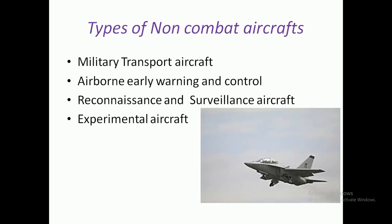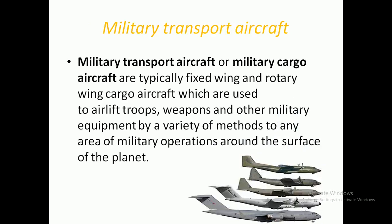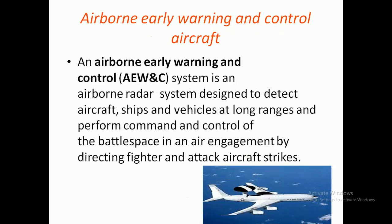The types of non-combat aircraft include: military transport aircraft, airborne early warning and control, reconnaissance and surveillance aircraft, and experimental aircraft. Military transport aircraft, also called military cargo aircraft, are typically fixed wing or rotary wing aircraft used to airlift troops, armaments, weapons, and other military equipment to areas of military operations. Airborne Early Warning and Control, commonly called AEW&C, is an airborne radar system designed to detect aircraft, ships, and vehicles at long ranges and perform command and control of the battle space, directing fighter and attack aircraft strikes.